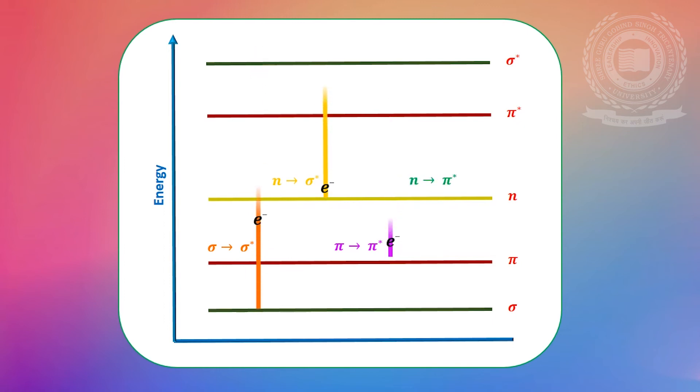N to pi star transition: Transition in which an electron from non-bonding molecular orbital is excited to pi star anti-bonding molecular orbital. N to pi star transitions are shown by compounds containing double bonds or triple bonds with heteroatoms like oxygen, nitrogen, sulfur, etc. Generally, these transitions are observed in carbonyl compounds. These transitions usually require minimum energy and show absorption at longer wavelengths with low intensity. N to pi star transitions are symmetry forbidden because N and pi star orbitals are not present in same plane.